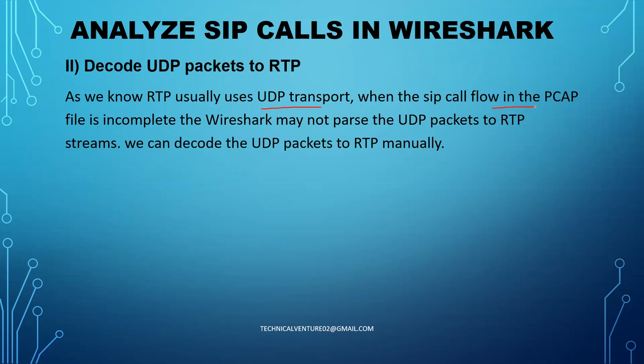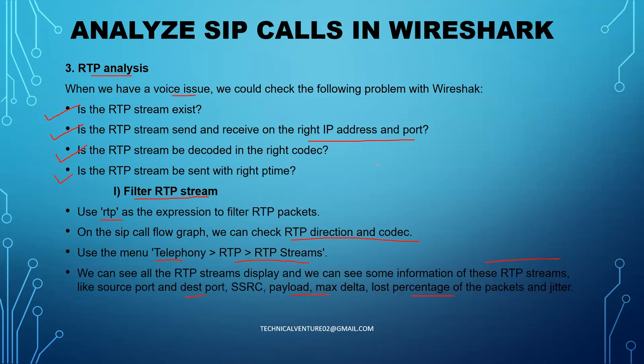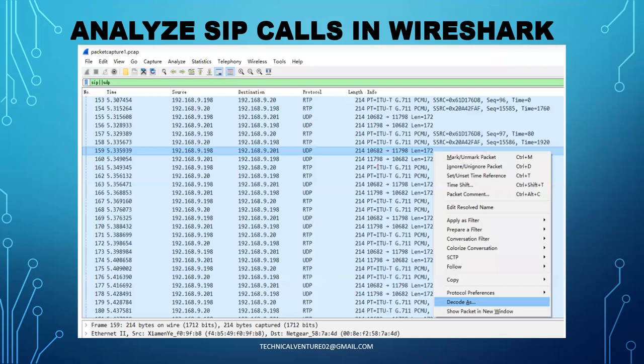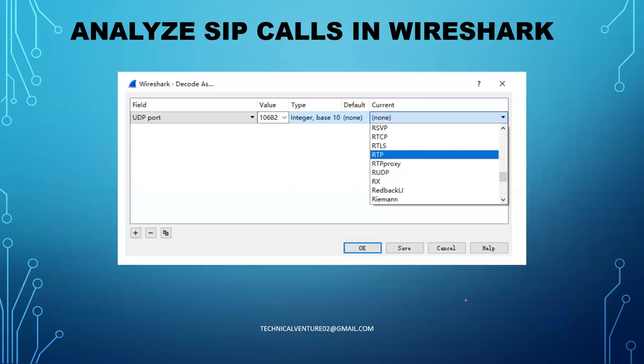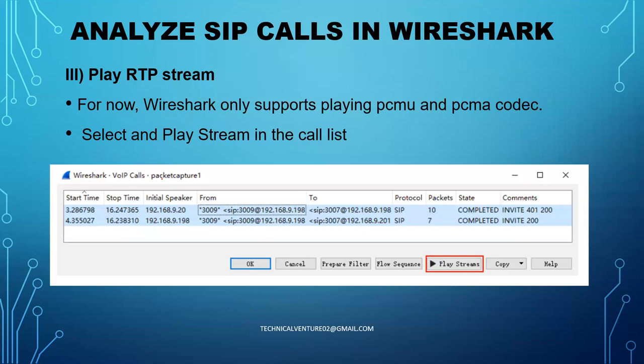Now, to decode UDP packets as RTP: RTP usually uses UDP transport, and when the SIP call flow in the pcap file is incomplete, Wireshark may not parse the UDP packets as RTP. At that point we can manually decode the UDP packets to RTP. To do this: filter the RTP stream, then select the UDP packet, right-click, click 'Decode As', and choose 'RTP' as the current protocol, then click OK.